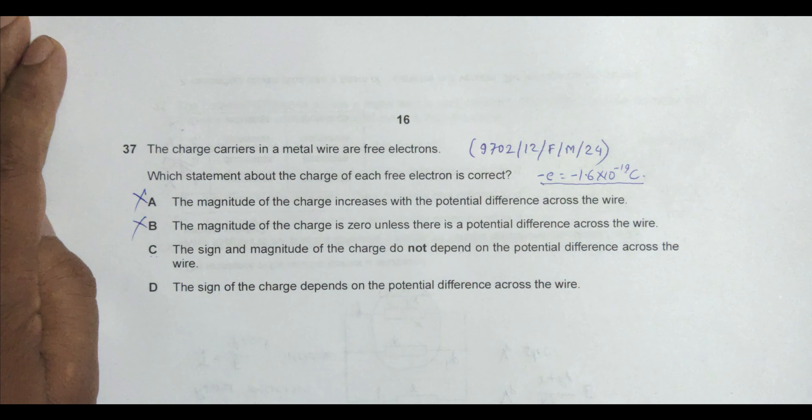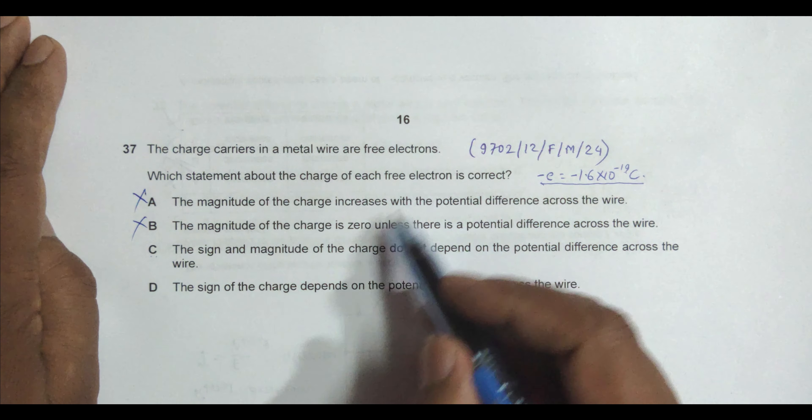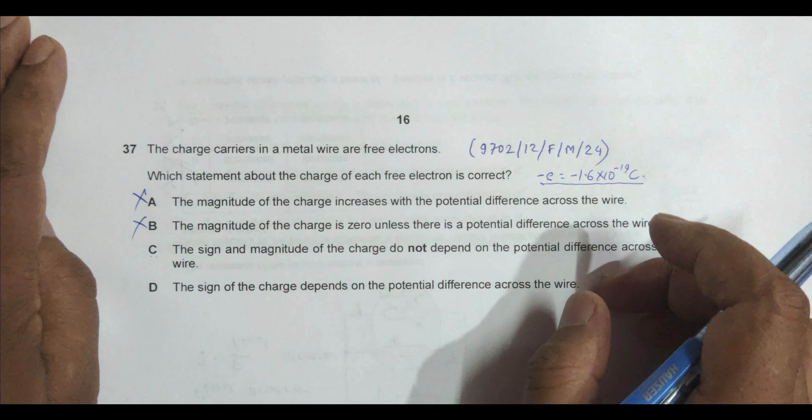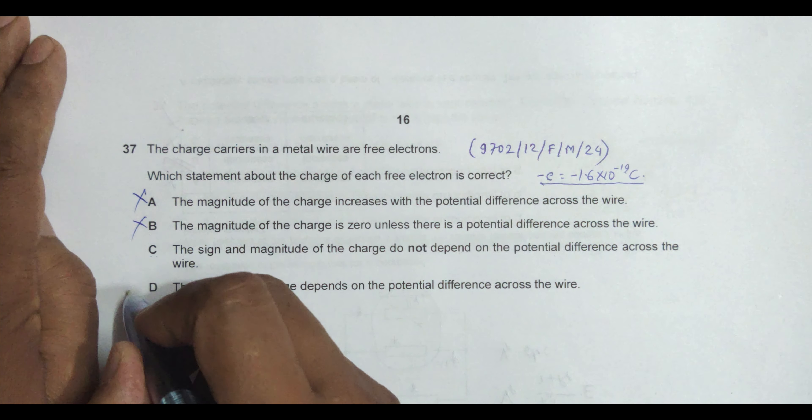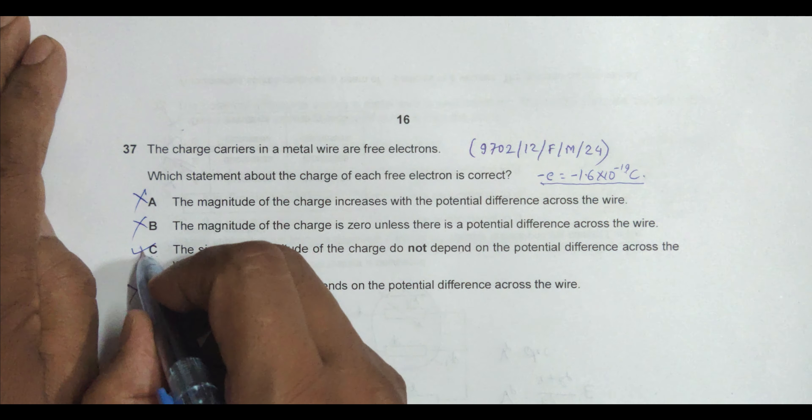Let's go for one more choice. The sign of the charge depends on the PD across the wire. Again no, because for free electrons the sign is negative, negative, negative. So this is also incorrect and the only correct choice is choice number C.